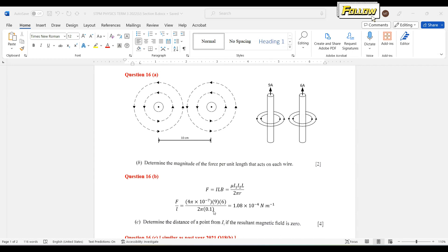So the force per unit length is derived as μ₀i₁i₂/2πr. Just put in all those values which are given in the question and the answer is 1.08 × 10⁻⁴ newton per meter.